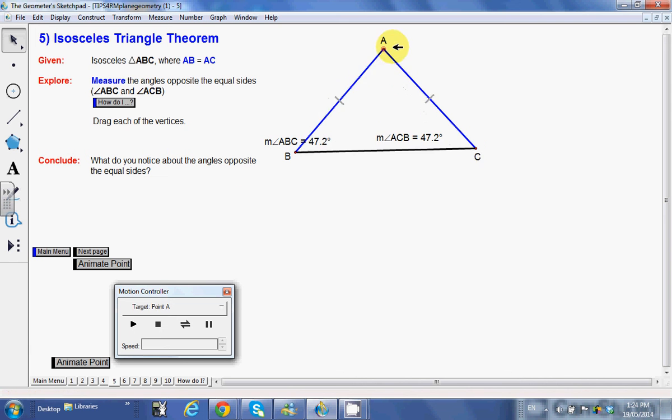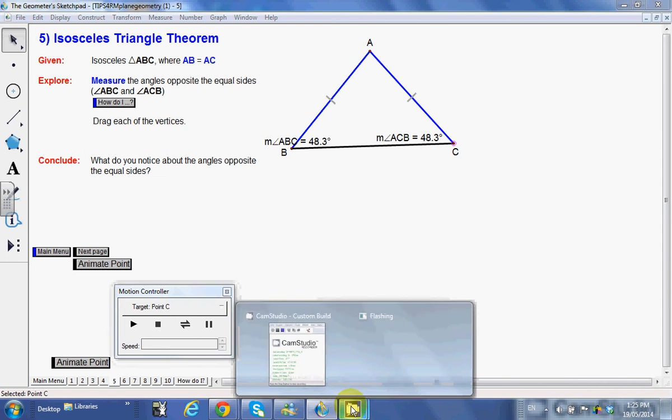And again, if I drag A and we notice that those angles stay the same, or maybe if I move C here. If I click on C, move these, keeping those two sides the same, again 48.3, 48.3. So I'll stop the video here and then I'll create another one just to complete the rest of these.